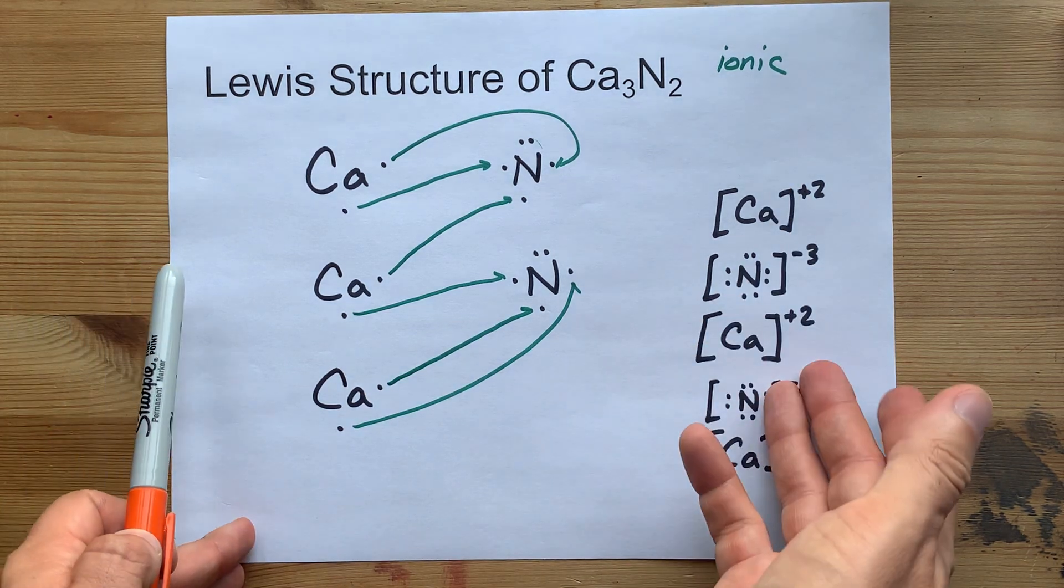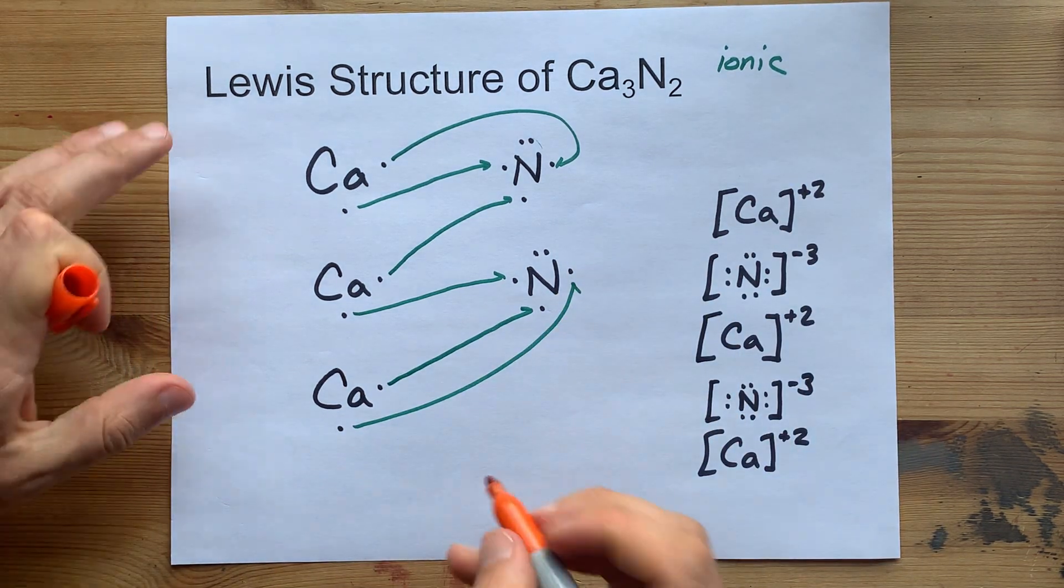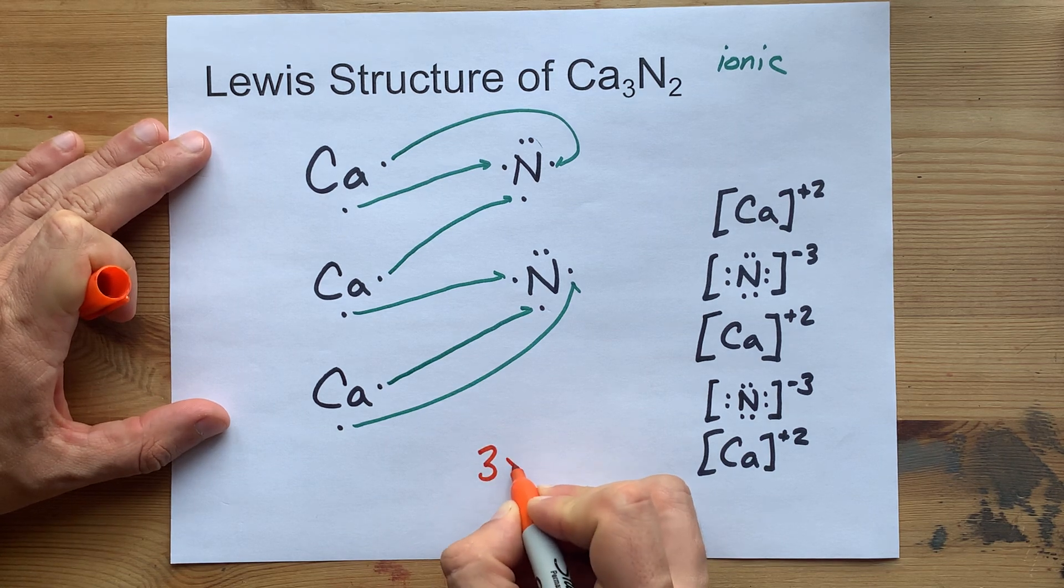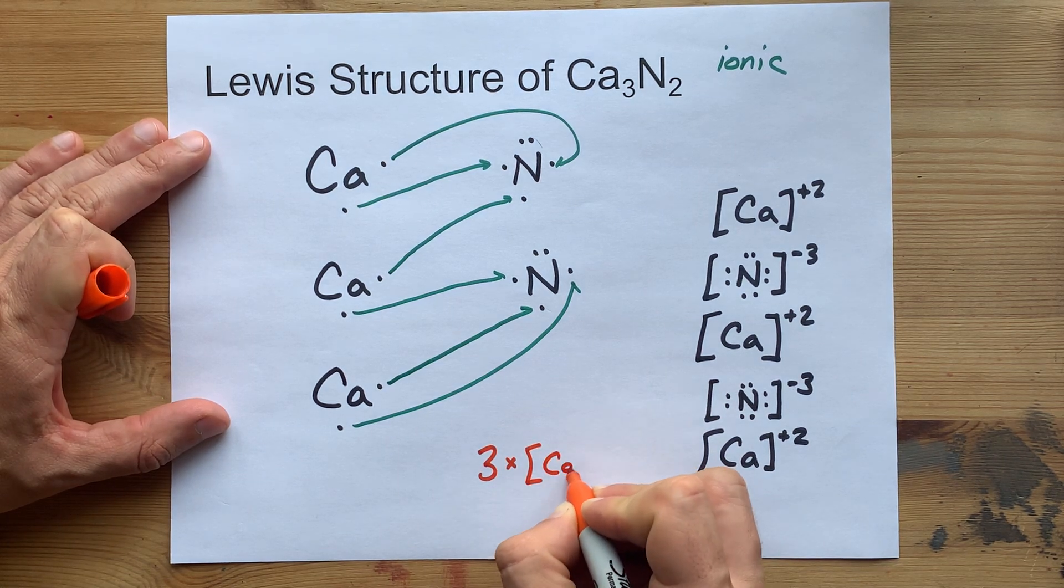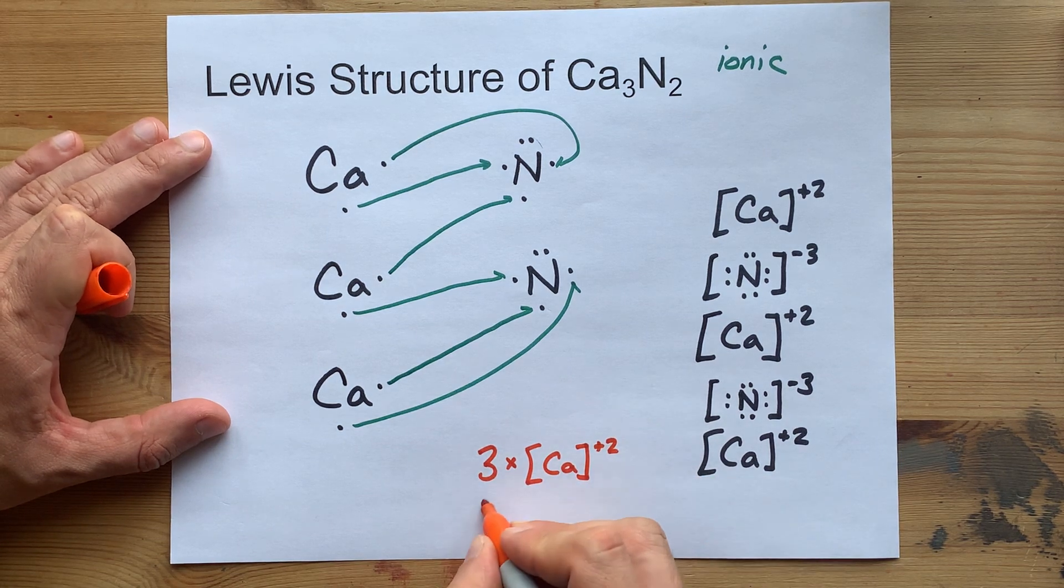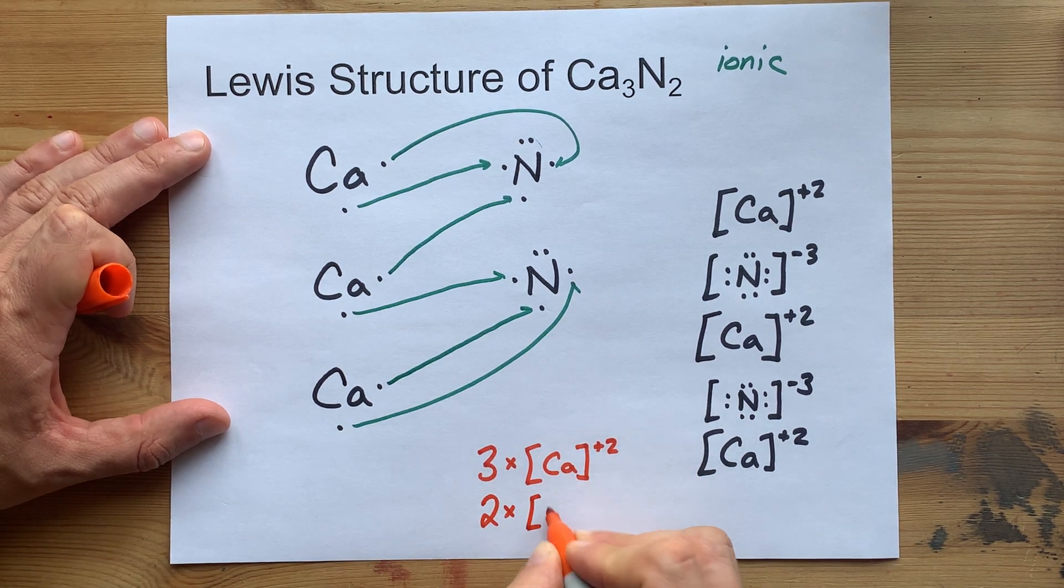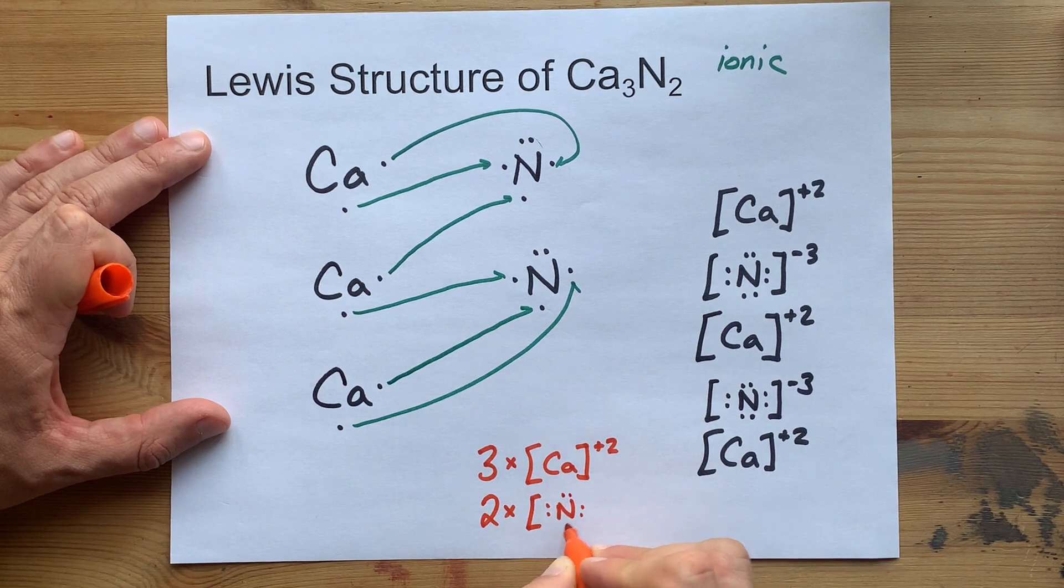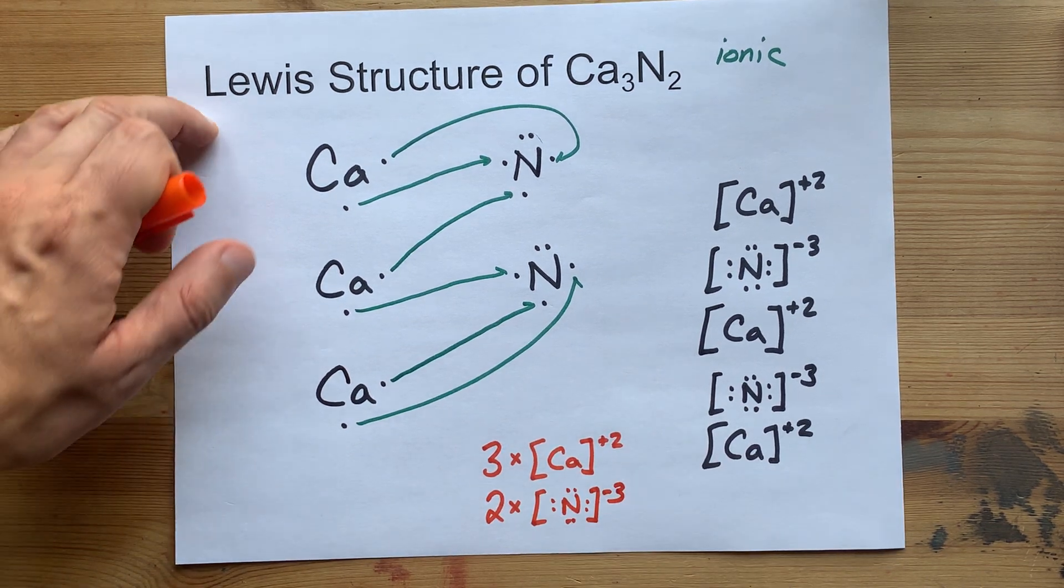If you thought it was annoying, your teacher might let you take a shortcut and write three times calcium with the two plus charge to show that there are three of them. And two times the nitrogen with its eight electrons each and its minus three charge.